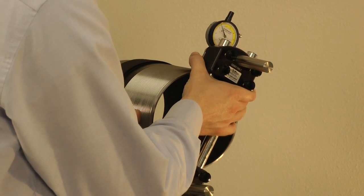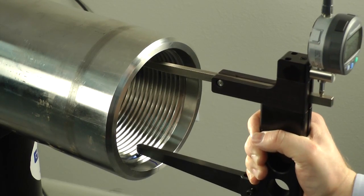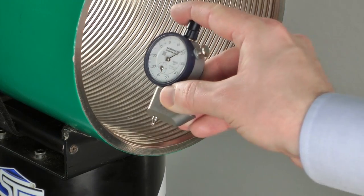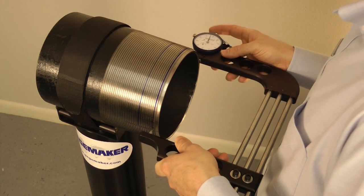GaugeMaker's line of thread inspection equipment checks all required tapered thread elements, including thread form, pitch diameters, lead, height, and taper, all with the precise accuracy required in today's most demanding industries.